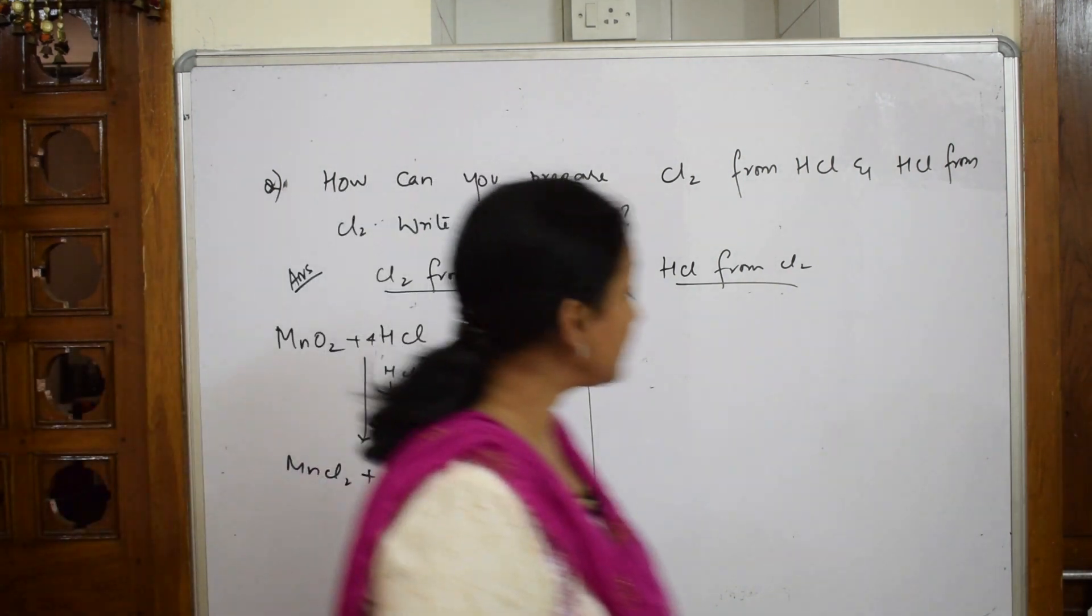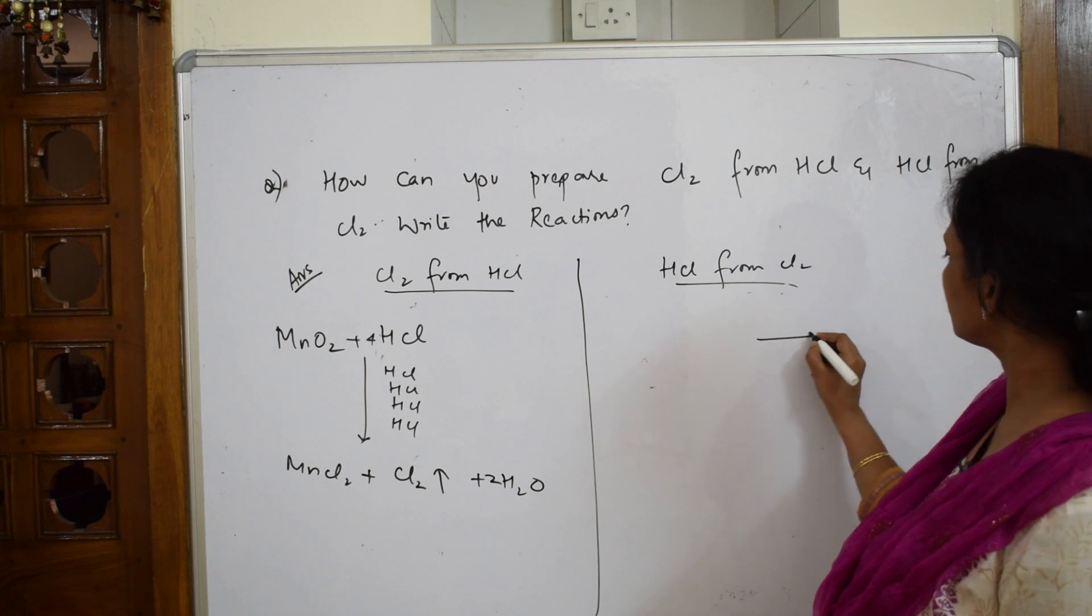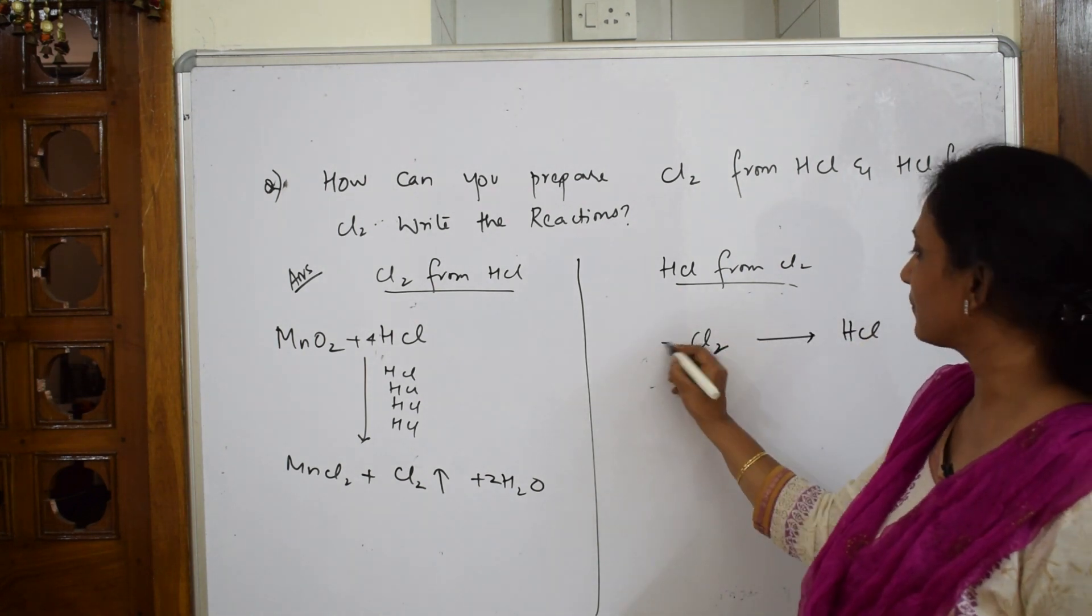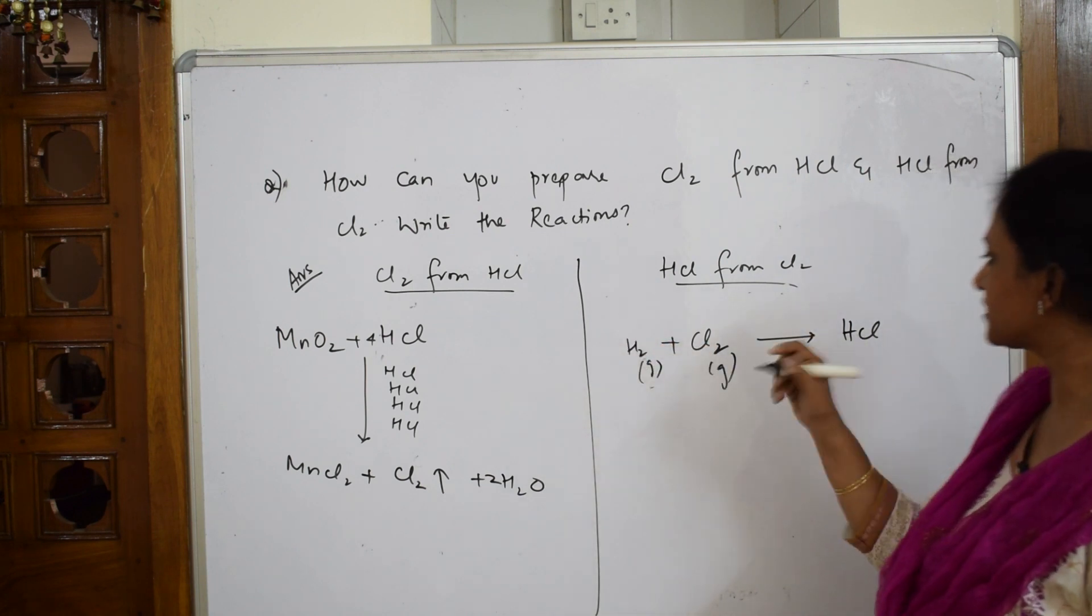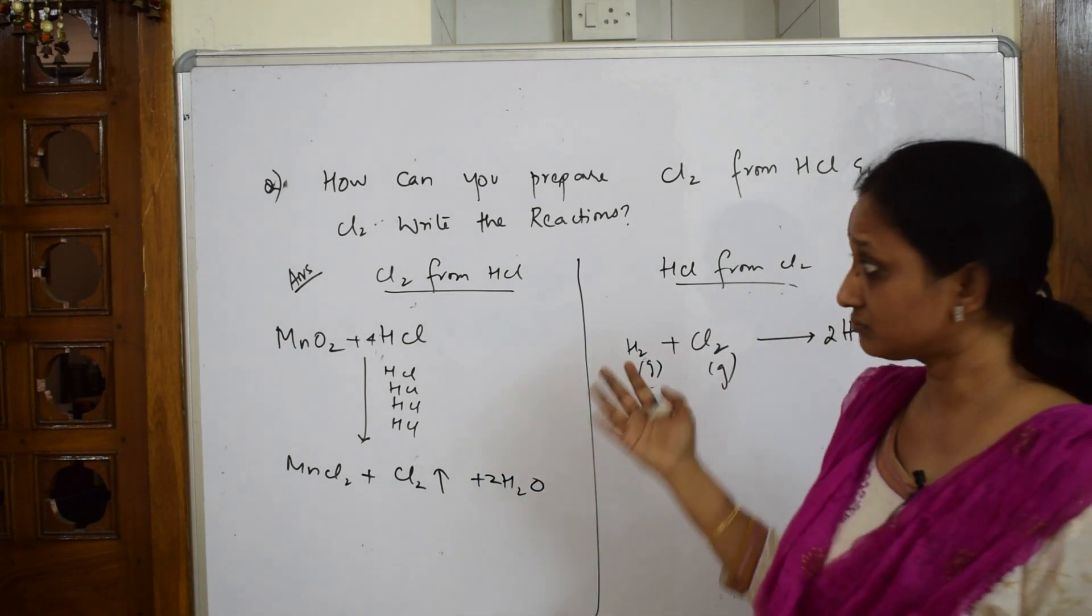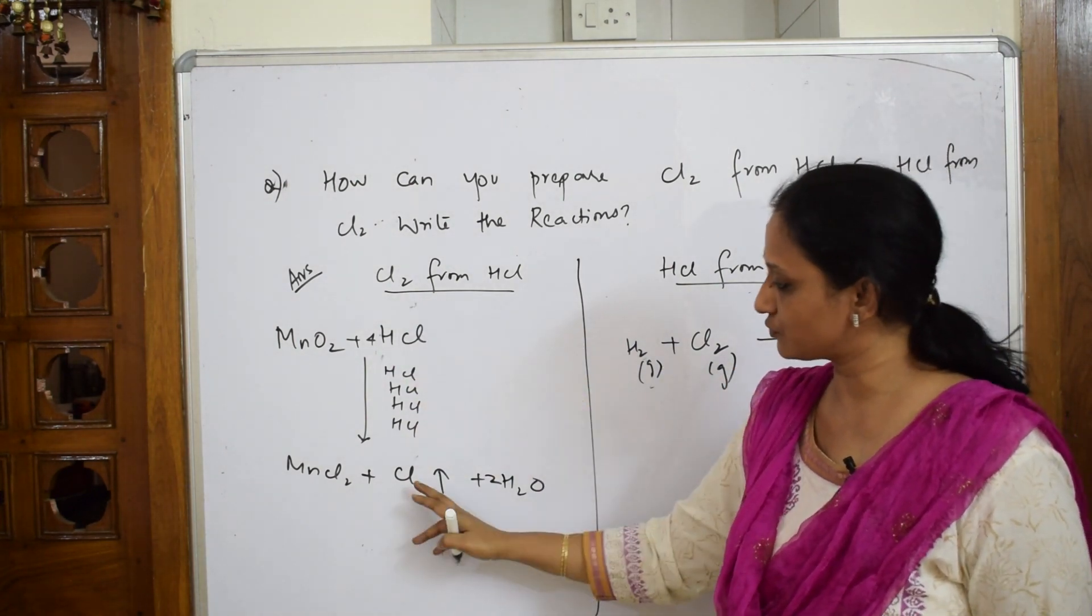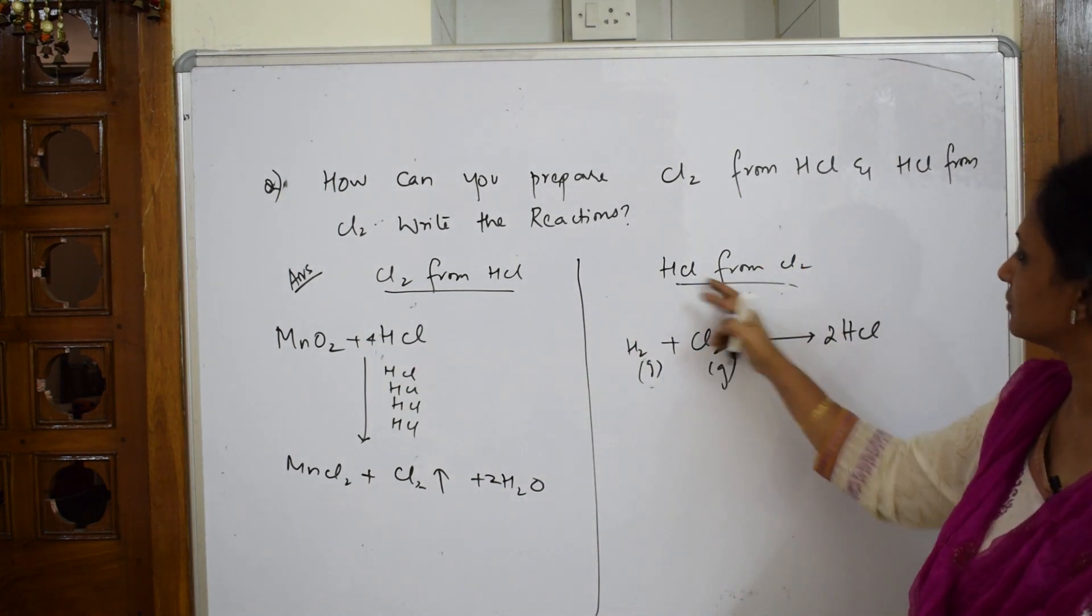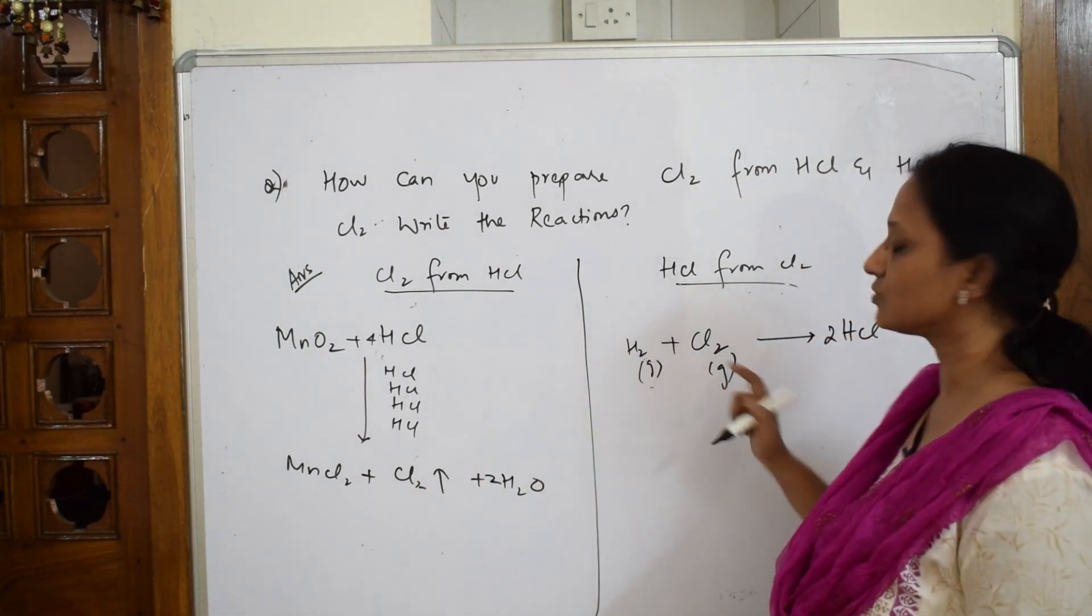Now if I have to come back to the next reaction, HCL from chlorine—that means I have to prepare HCL. So I pick chlorine and add hydrogen to this. Simple: HCL. Why did I write this reaction? Most students get confused: this is chlorine from HCL, so from the reactant. HCL from chlorine—your chlorine is a product here, chlorine is a reactant there.